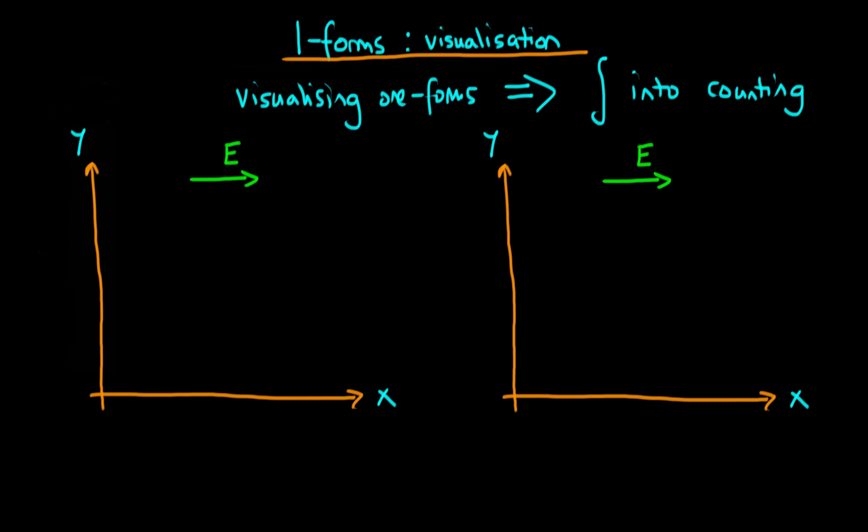The example we're going to be using here is how can we calculate the work done by moving a charged particle through a field. We're going to imagine that this is a uniform field in the x direction as I've indicated here by the green arrow.